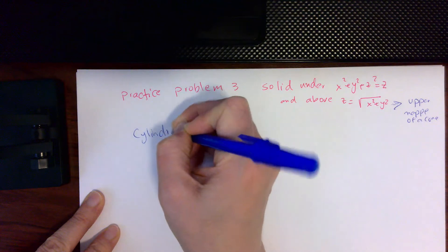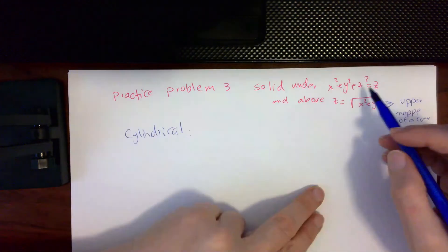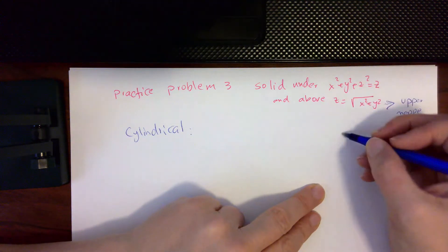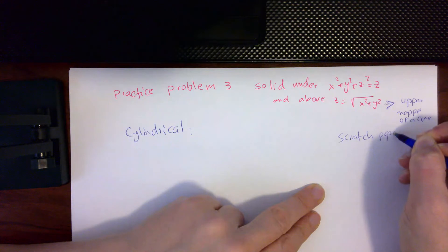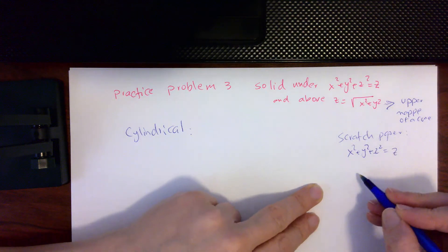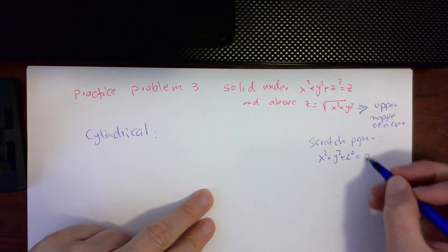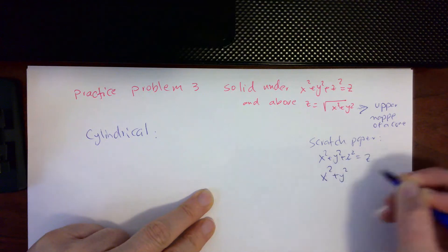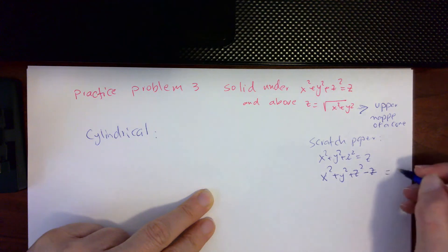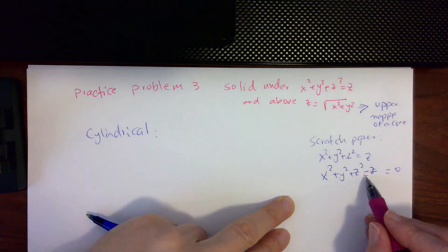When setting up cylindrical coordinates, I first want to understand what these shapes look like in Cartesian coordinates. On my scratch paper, I'll figure that out by completing the square. I'll take the z term to the other side and figure out what I need to add and subtract. What I need is half of negative one, which is the coefficient of z, giving me negative one half.